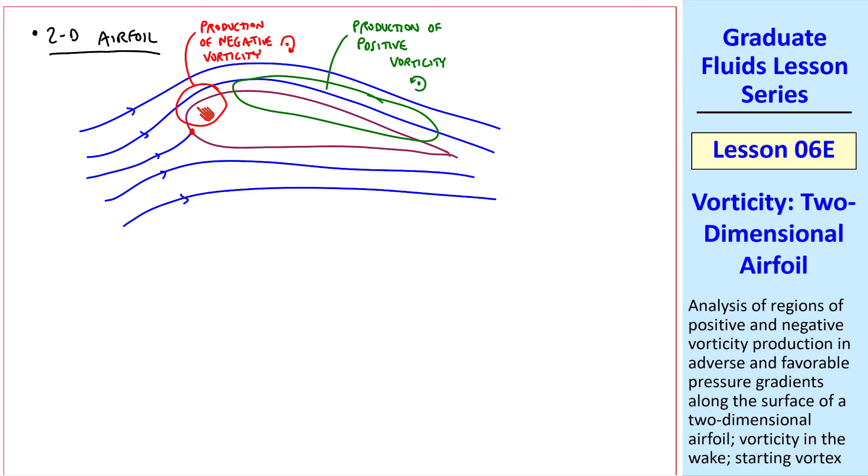This is a region of favorable pressure gradient, and this is a region of adverse pressure gradient. A similar thing happens on the bottom of the airfoil, but the signs are all kind of backwards, since the boundary layer is upside down. We end up with a production of positive vorticity here, and a production of negative vorticity here. In these little sections of flow, there's no vorticity production, since there's no pressure gradient.